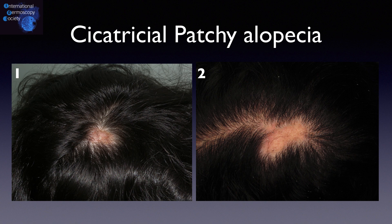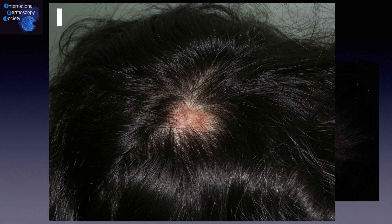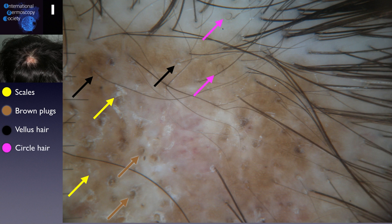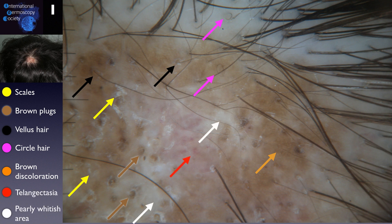Now we have two cases of cicatricial patch alopecia. In the first case, we have erythema and discoloration on physical examination. Dry tricoscopy is very important here and presents with scales in the affected area, brown keratotic plugs, vellus hairs in the periphery of the patch, circle hairs — which are very commonly seen in this disease — scattered brown discoloration of the skin, some telangiectasias, and pearly whitish areas in the center.